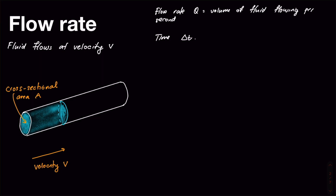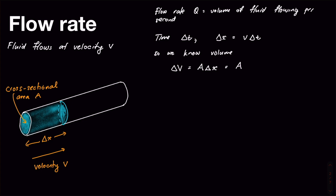Looking at our diagram, if we know delta T, we can figure out how far the fluid has flowed — delta X — using a simple kinematic calculation. Delta X is just the velocity V times the elapsed time delta T. We know that distance and we know the cross-sectional area, which means we know the volume of that little blue cylinder. So delta V, the amount of volume that's flowed in that time, equals the cross-sectional area times delta X, which equals A times V times delta T.